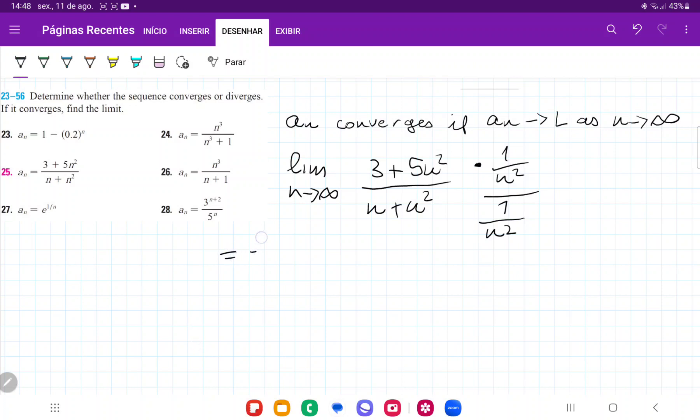And so this is going to be equal to the limit as n approaches infinity of 3 over n squared plus 5 divided by 1 over n and then plus 1. And so now that we do this, it's going to be way easier because then this is the limit as n approaches infinity of 3 over n squared and then plus 1 divided by the limit as n approaches infinity of 1 over n and then plus 1.